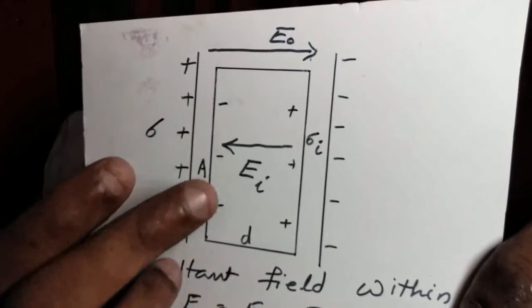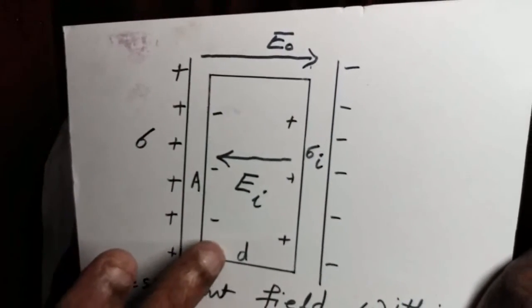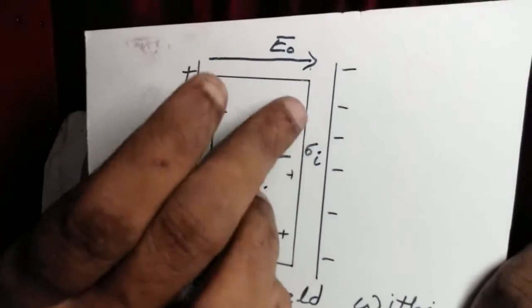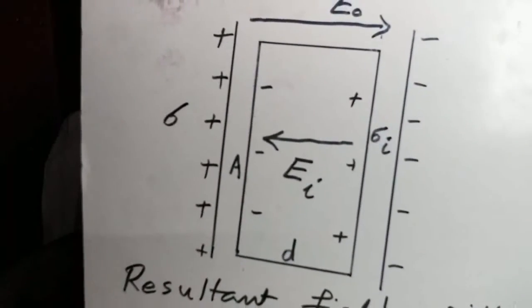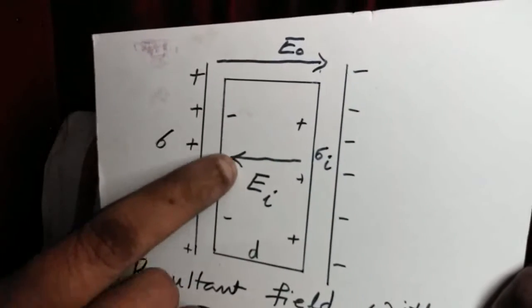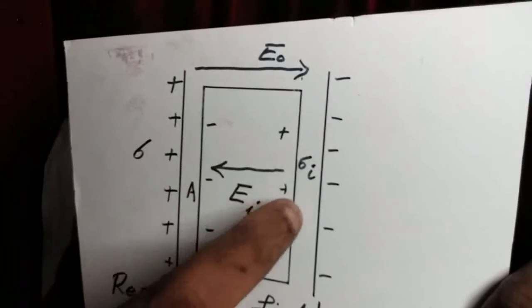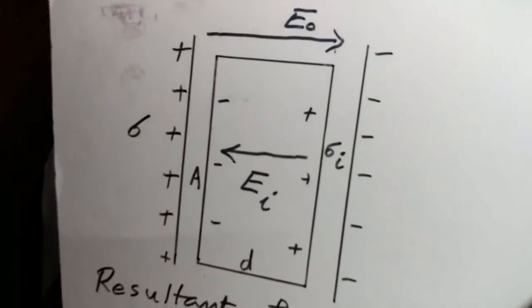By polarization, a net negative charge appears on one face and an equal positive charge on the other face of this slab. Definitely, the density of these charges will be of magnitude less than sigma. Such a material is specially called a dielectric material. If the two charge densities are equal, that material becomes a good conductor. We will discuss it in the next post.